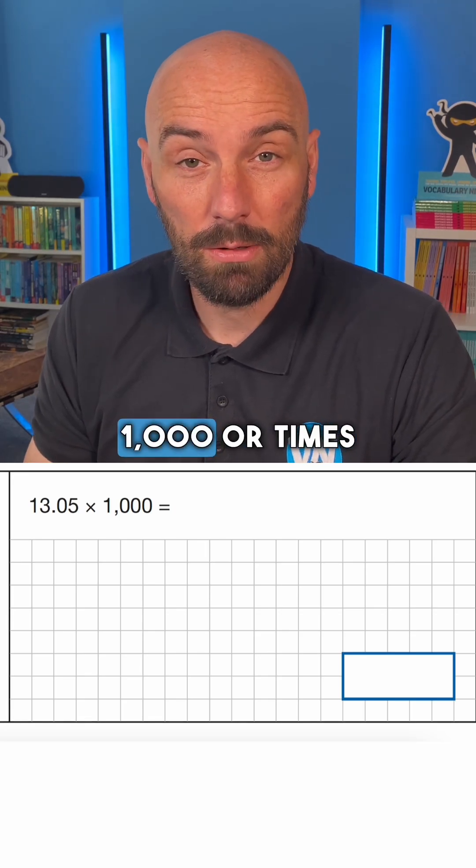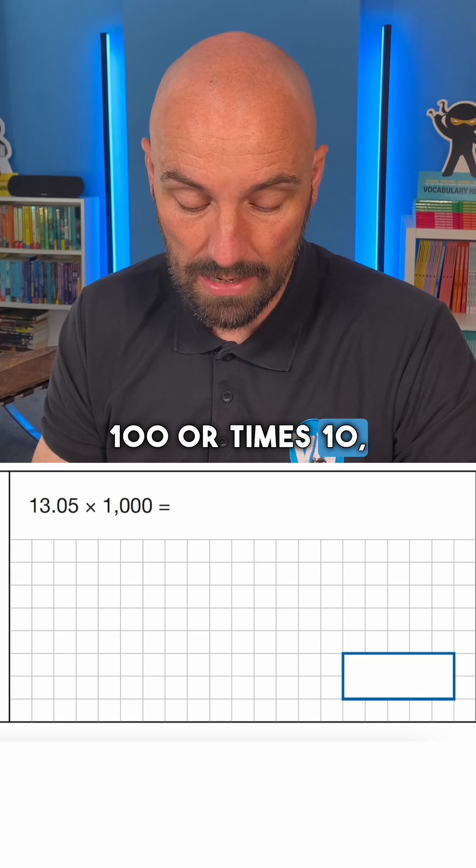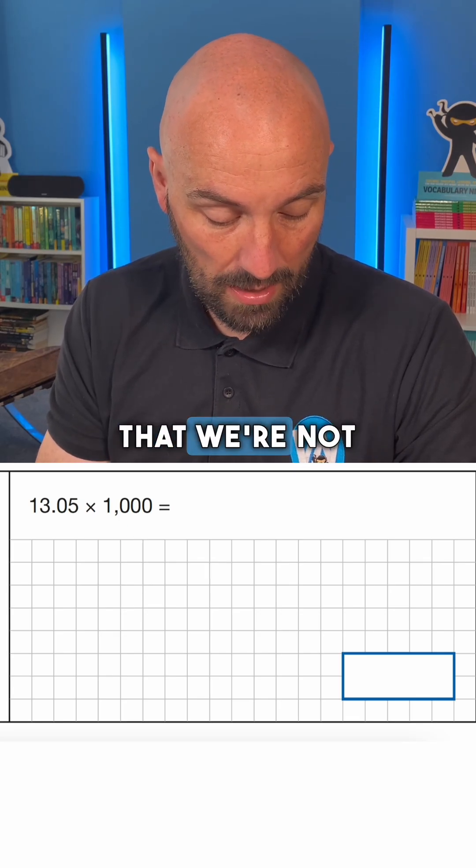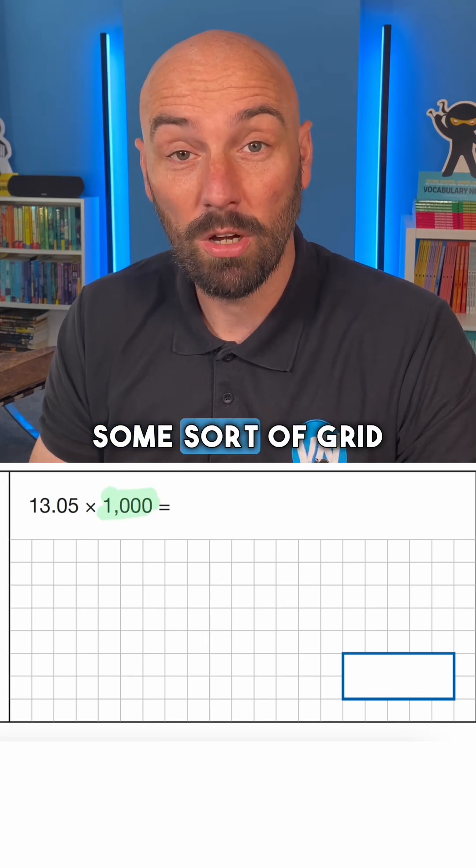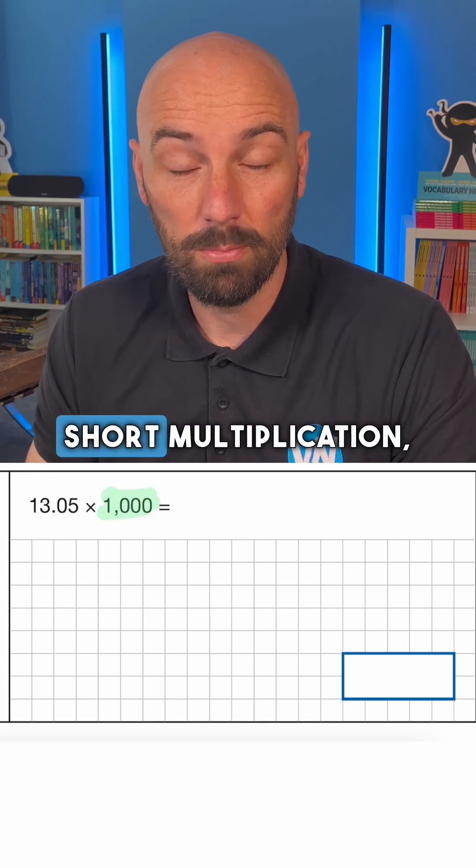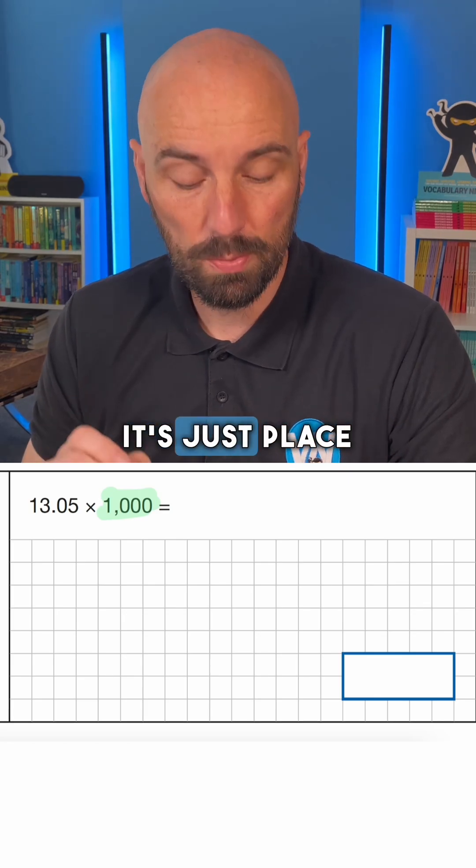And again, when we see times a thousand or times a hundred or times ten, it's remembering that we're not jumping straight into some sort of grid multiplication, short multiplication, long multiplication. It's just place value.